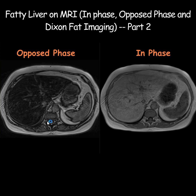Focus on the liver — compare its signal intensity on in-phase imaging with that of the spleen. On in-phase imaging, the liver appears brighter than the spleen. But when you compare it with the opposed-phase imaging, this pattern is reversed: the spleen actually appears brighter than the liver.